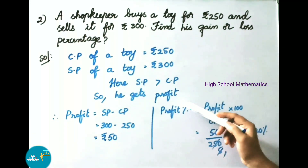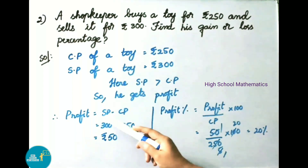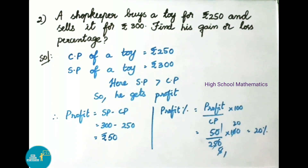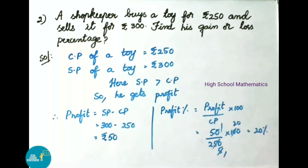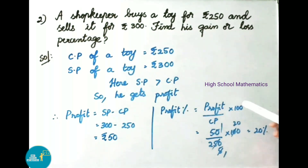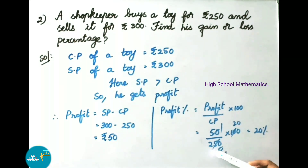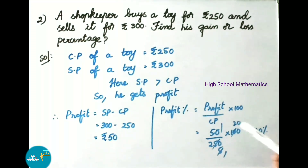Profit equals selling price minus cost price, that is 300 minus 250 rupees, which is 50 rupees. Therefore the shopkeeper gets a profit of 50 rupees. Since he got profit, we find profit percentage: profit by cost price into 100, that is 50 by 250 into 100. Simplifying gives 20 percent. Therefore shopkeeper gets a profit of 50 rupees and profit percentage of 20 percent.